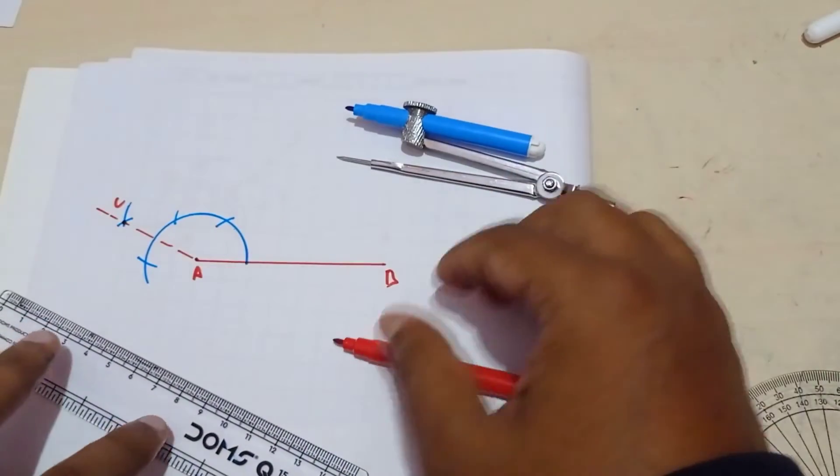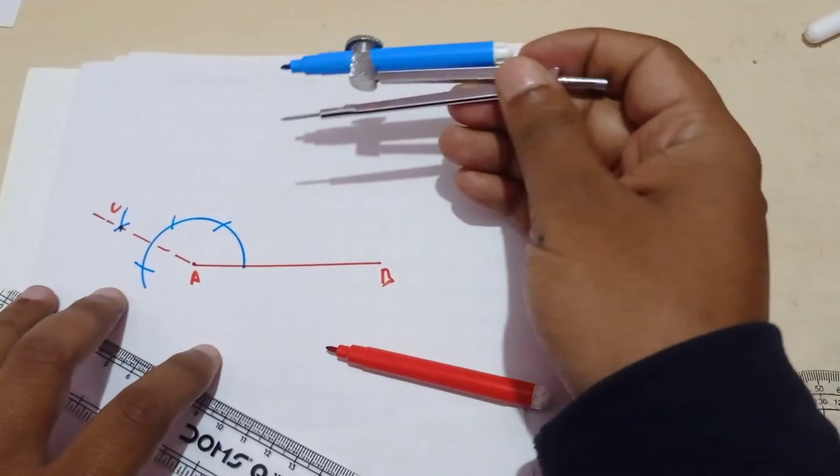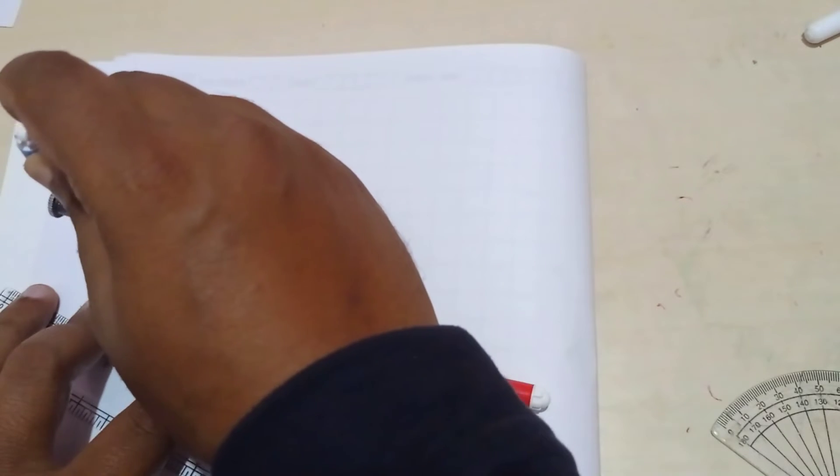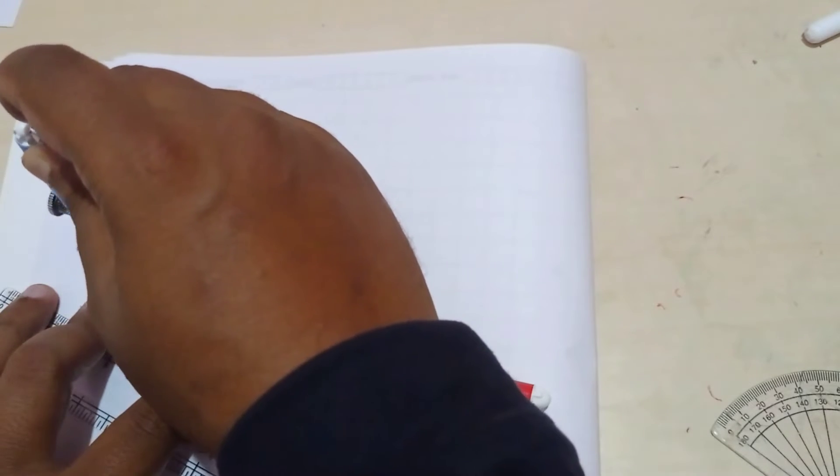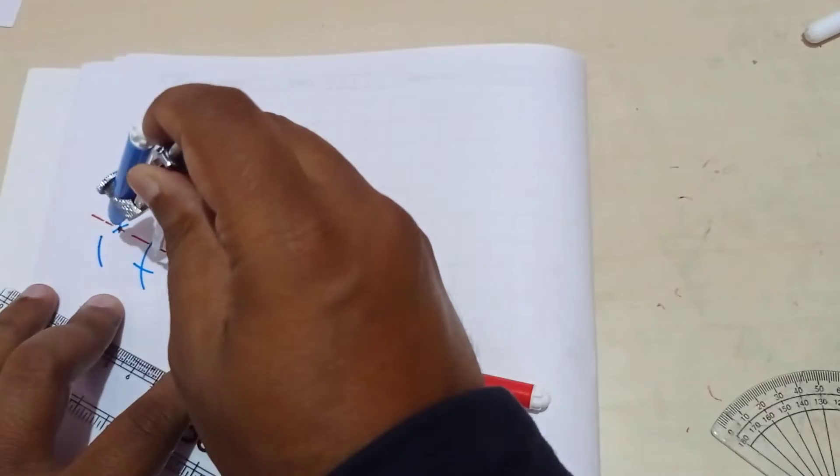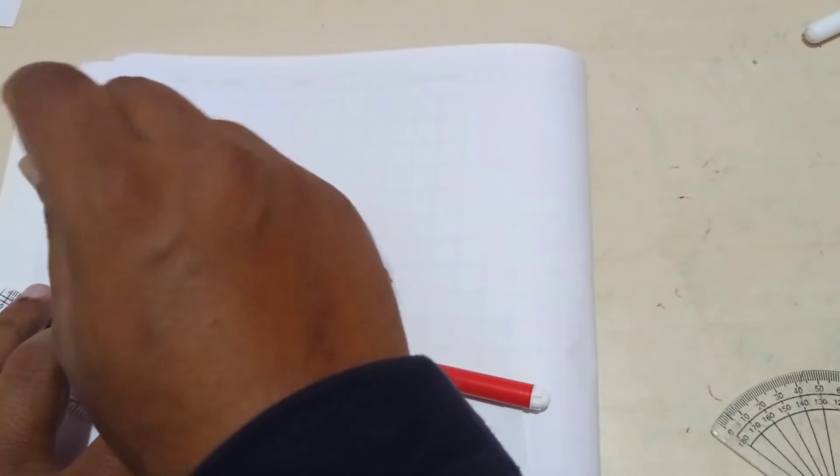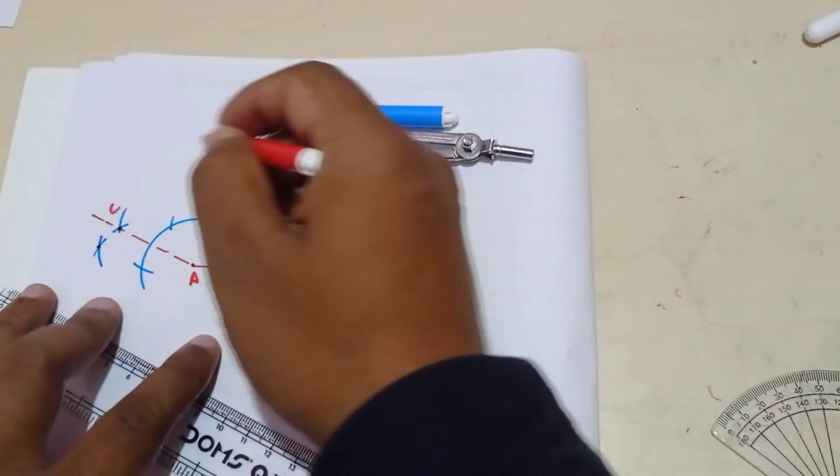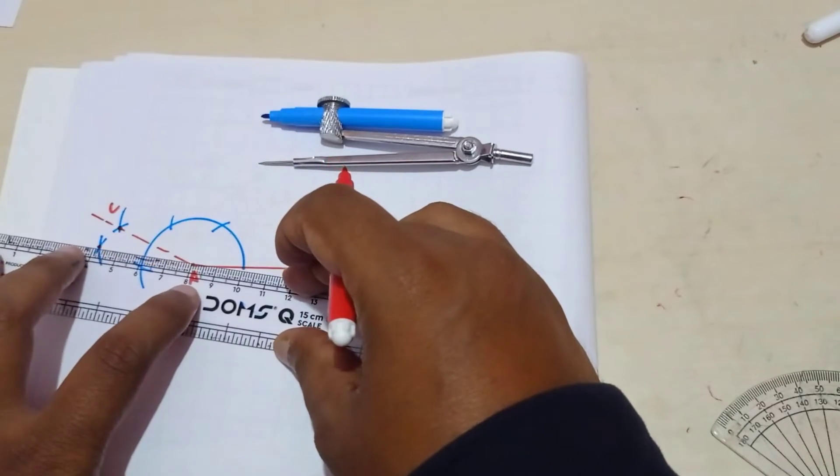So this is 150 degree angle. Now from this point draw an arc. From this point draw another arc. Now this point to here you just draw a line.